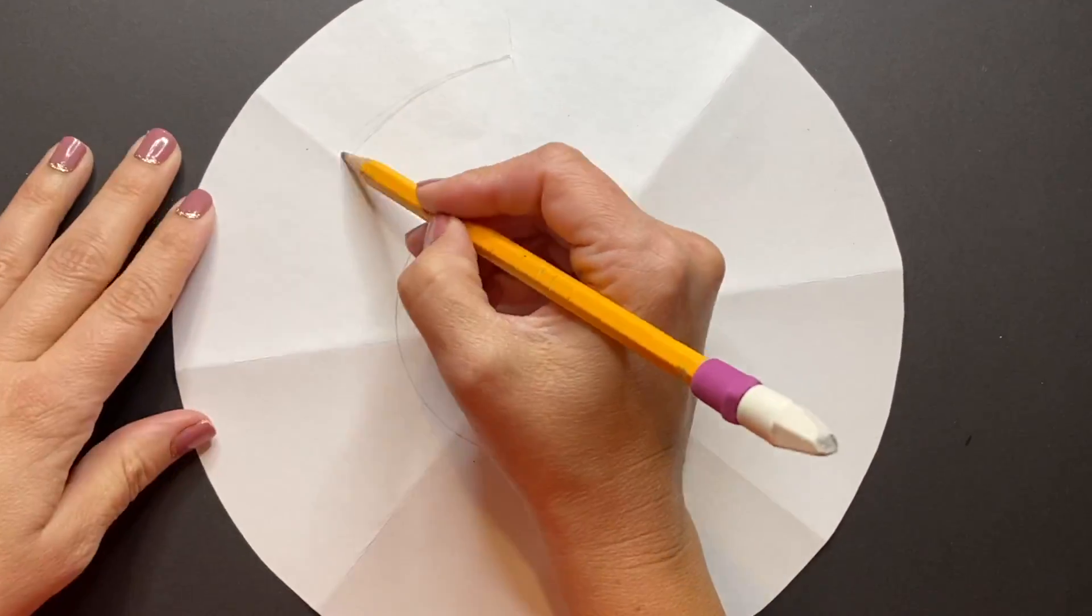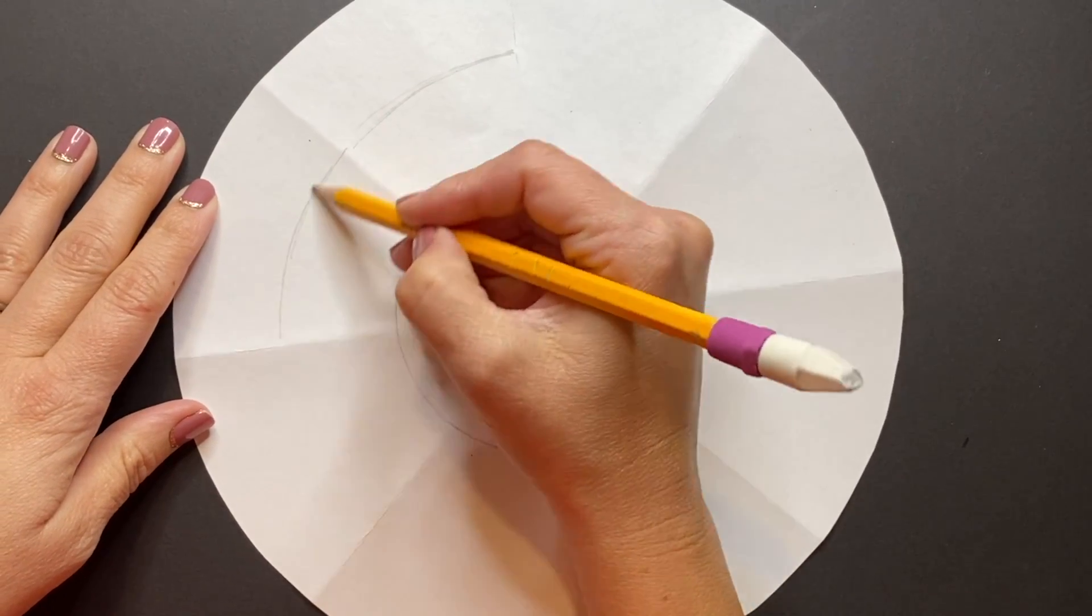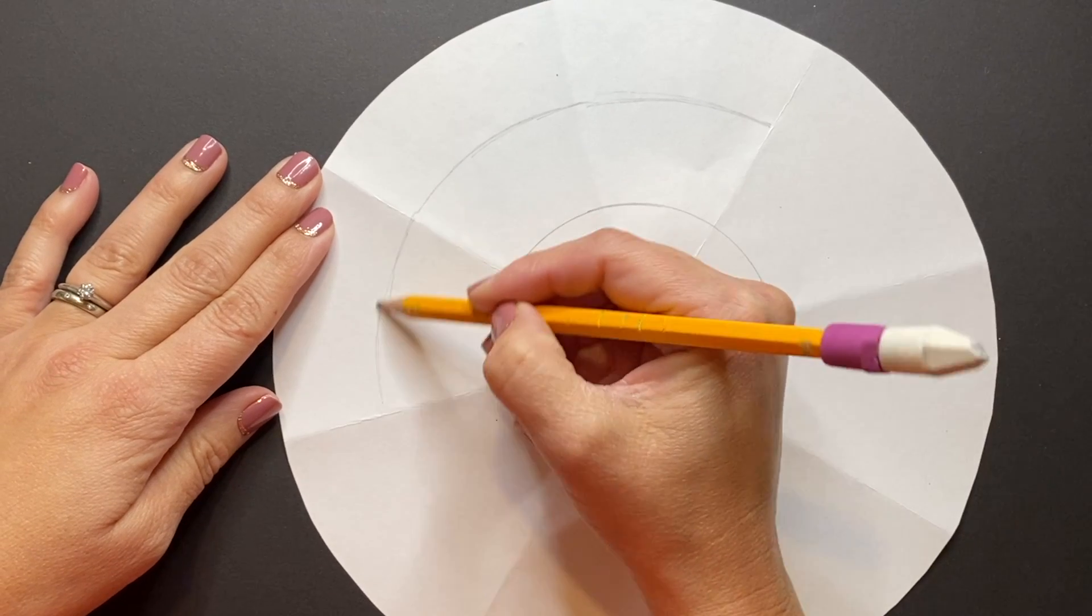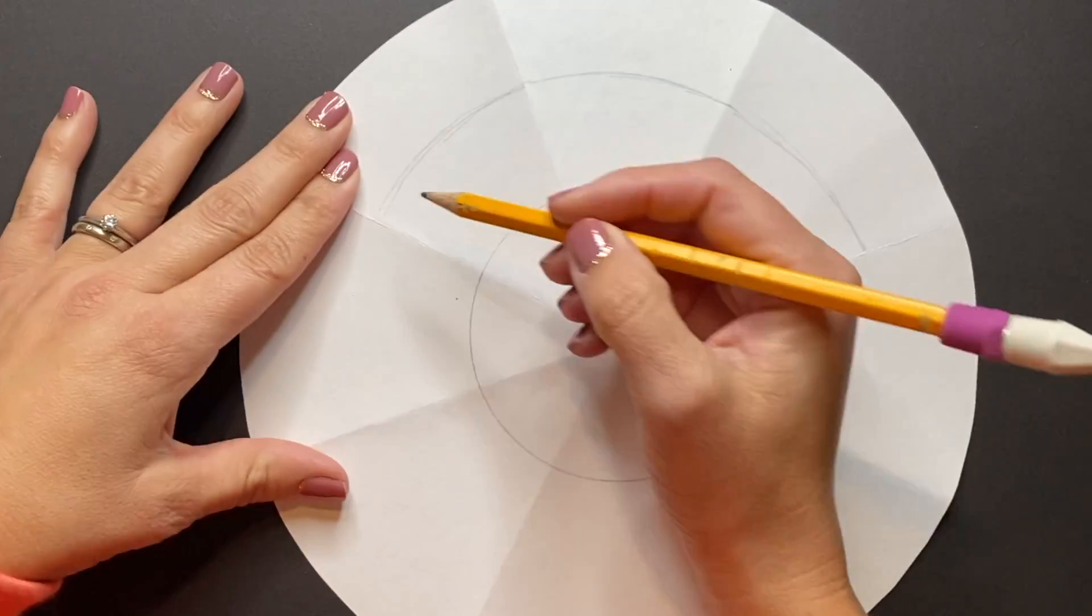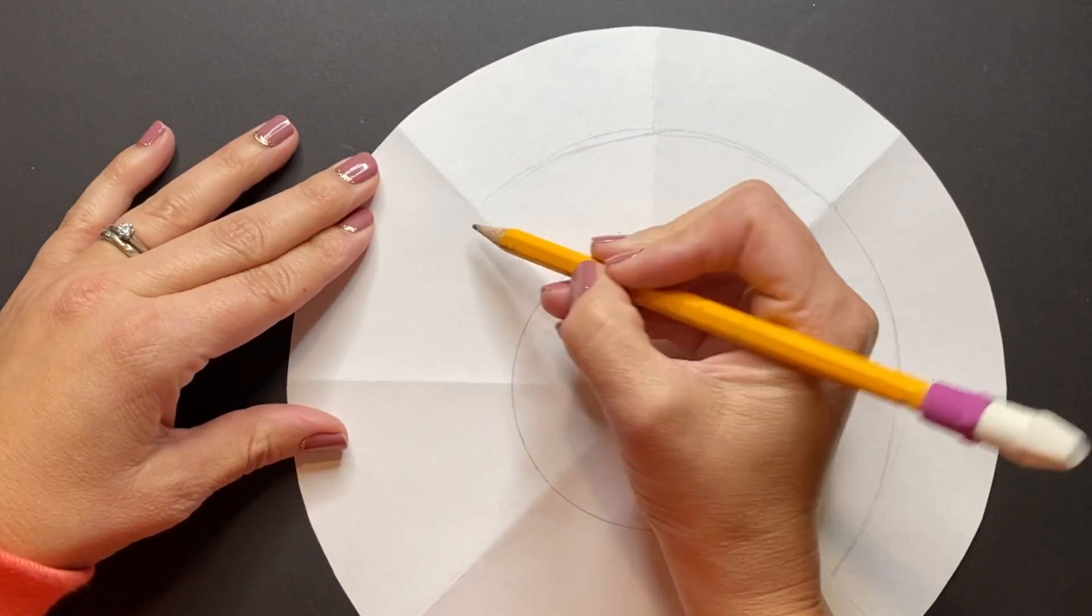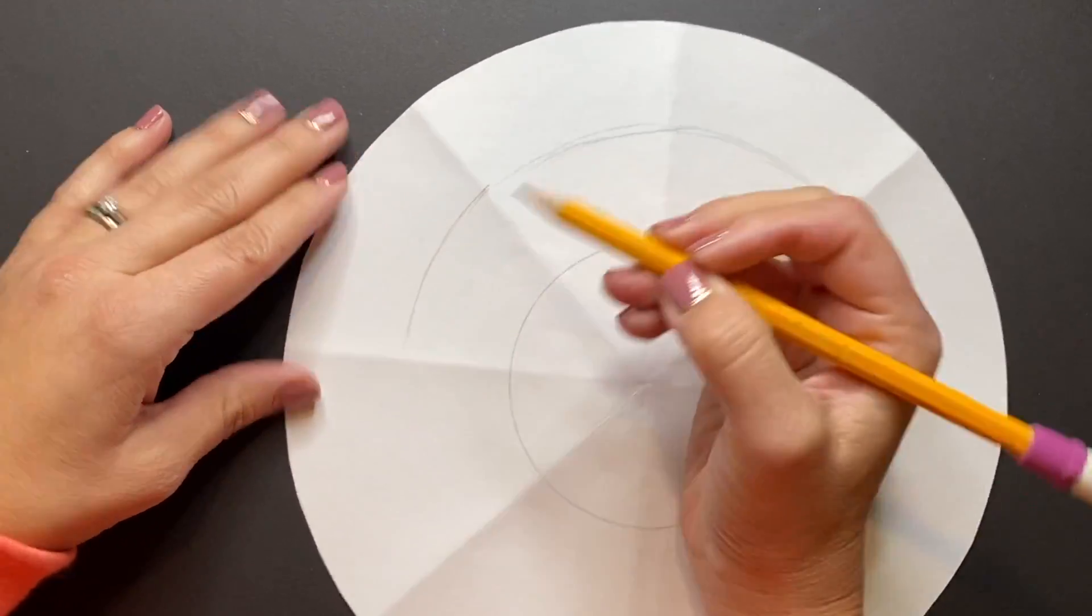Now if you have another circle about the same size you can trace it, or I'm going to show you how you can just freehand sketch a curved line that continues to touch in each section of those triangles. That's a really easy way to freehand a pretty good circle without having to trace anything.